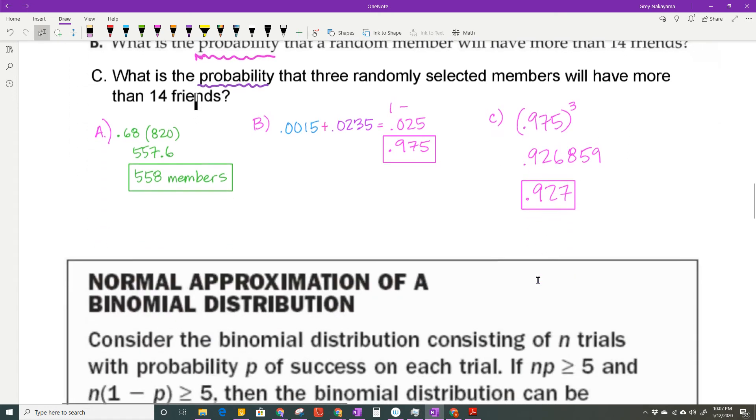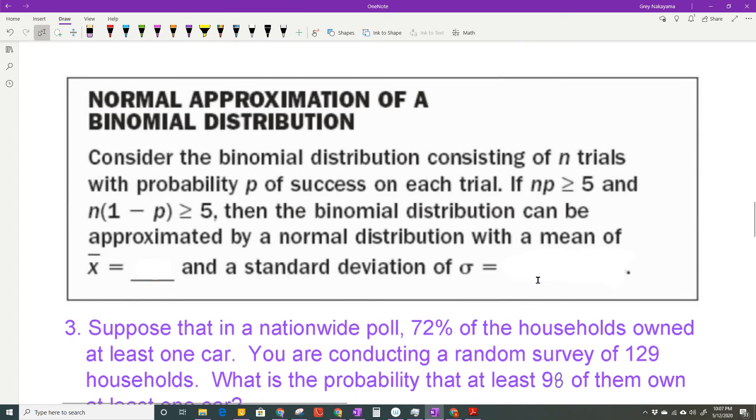Okay, the last thing we need to talk about here is the normal approximation of a binomial distribution. Remember, a binomial distribution is when we only have two possibilities. It's either true or false, or heads or tails, or on that multiple choice test, even though you had four choices, only one of them, every answer was either right or wrong. So consider the binomial distribution consisting of n trials with a probability of P of success on each trial if n times P is greater than 5 and n times 1 minus P. I actually talked about this previously as Q. So think of that as 1 minus P is also Q. That's failure. P is success.